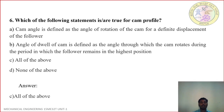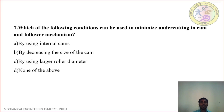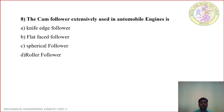Question 7: Which condition can be used to minimize undercutting in cam and follower mechanism? A: By using internal cams, B: By decreasing the size of the cam, C: By using large roller diameter, D: None of the above. Correct answer is A: By using internal cams. Question 8: The CAM follower extensively used in automobile engines is — A: Knife-faced follower, B: Flat-faced follower, C: Spherical follower, D: Roller follower. Correct answer is Spherical follower.